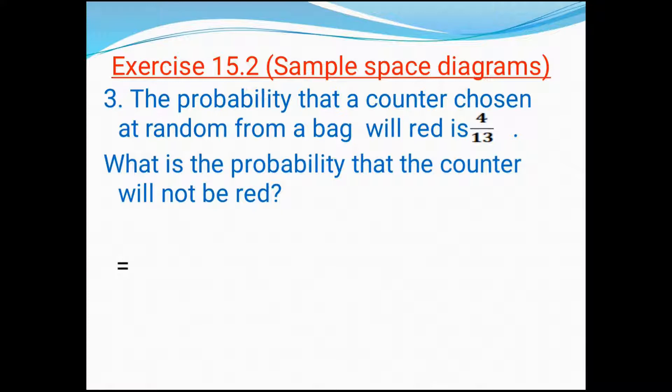Let's enter the next one. The probability that a counter chosen at random from a bag will be red is four by thirteen. Now they are asking, what is the probability that the counter will not be red? Will not be red - that means when they're using 'not,' you have to use subtract from one. So one minus whatever fraction they have given, four by thirteen. If we do the LCM on the denominator, it's thirteen. Thirteen multiplied by one is thirteen, and thirteen divided by thirteen is one. Four multiplied by one is four. So thirteen minus four, we can tell nine. So our answer is nine by thirteen.